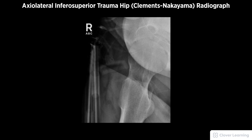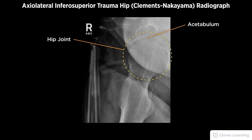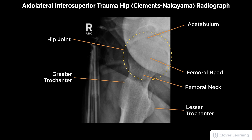A diagnostic axial lateral inferior-superior trauma hip Clemens-Nakayama view radiograph must be free of motion. Demonstrated anatomy should include the hip joint with the acetabulum, femoral head, neck, and trochanters, with proper visualization of soft tissue and bony detail.